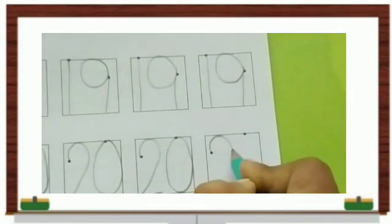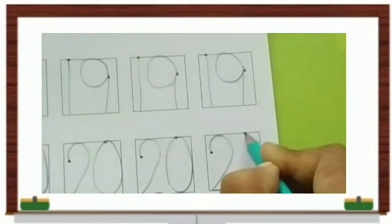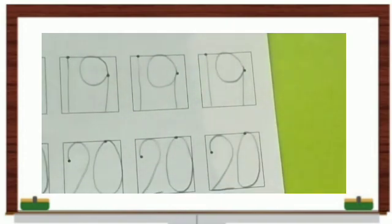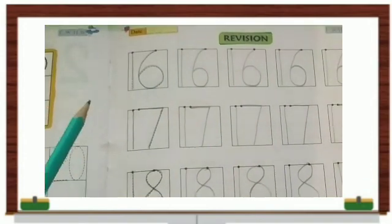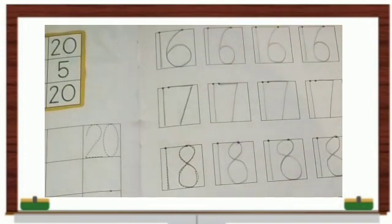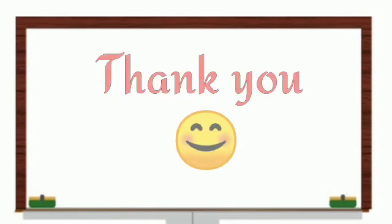After 19 comes number 20, 2, 0, 20. So children, see we have finished writing numbers from 16 to 20. As a class, kindly complete this work. We'll meet again in the next video. Till then, bye children. Thank you. See you next time.